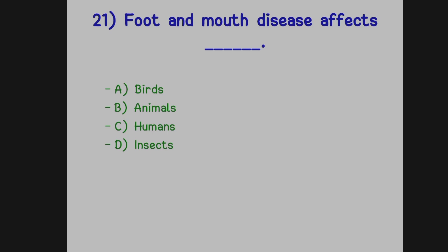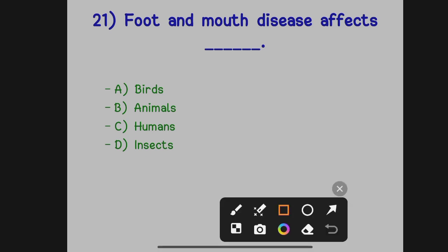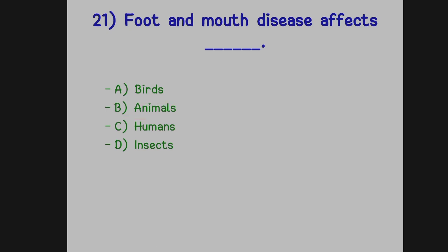Foot and mouth disease affects dash. Option A: Birds. Option B: Animals. Option C: Humans. Option D: Insects. The correct answer is Option B, animals — especially cattle which suffer from foot and mouth disease.